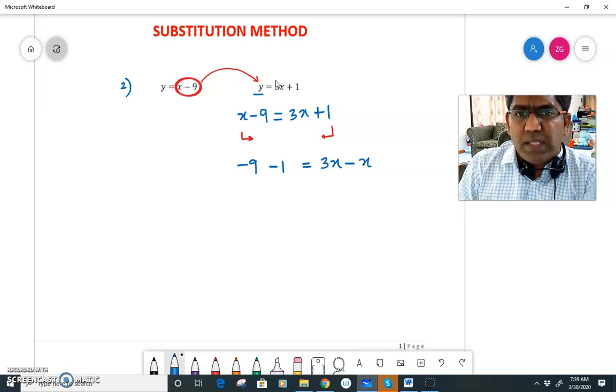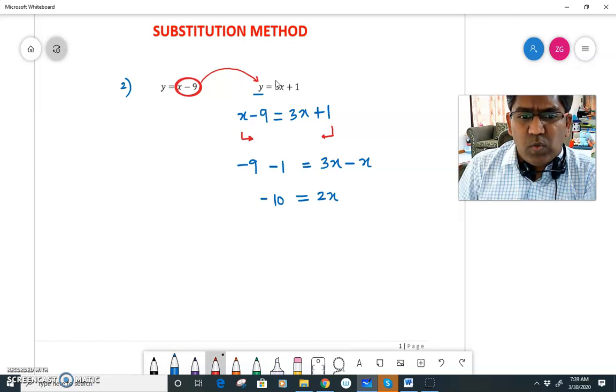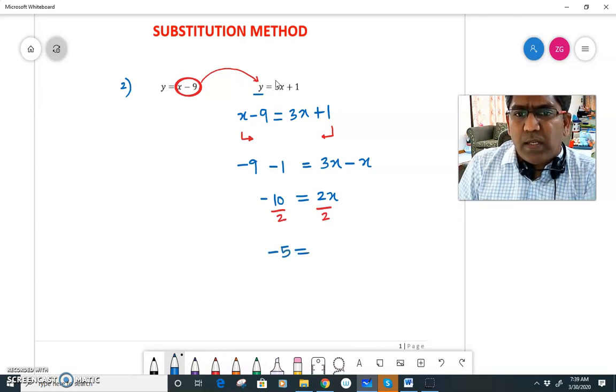Minus 9 minus 1 will give me minus 10, and 3x minus x gives me 2x. I need to eliminate 2 which is in multiplication, so I divide both sides by 2. Now dividing by 2, minus 10 by 2 gives me minus 5, and here 2 and 2 will get cancelled. I'll get x. So my value for x is minus 5.